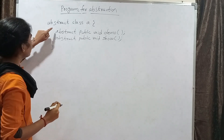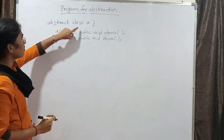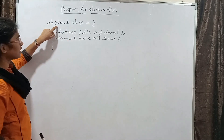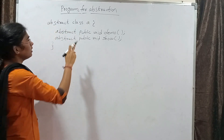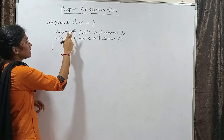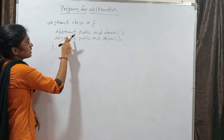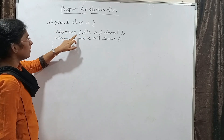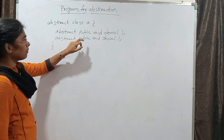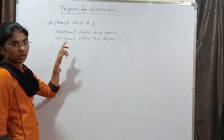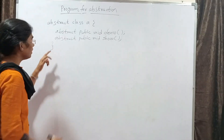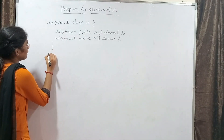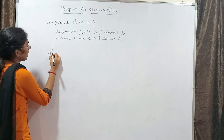In this we declare an abstract class by using the abstract keyword. In the abstract class at least one abstract method can be present, but we do not write any body for the abstract method, and then we take another class.